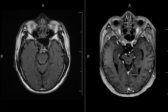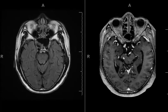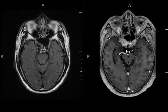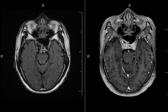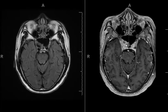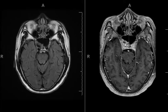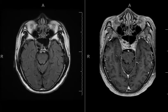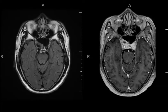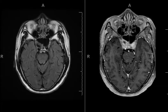The corresponding axial post-contrast sequence from the same MRI — again, you can see this mucoperiosteal thickening, there's probably some fluid within it, and again you can see the adjacent cavernous internal carotid artery here.